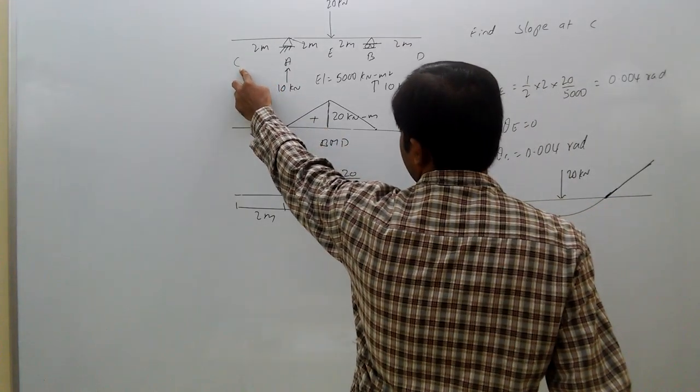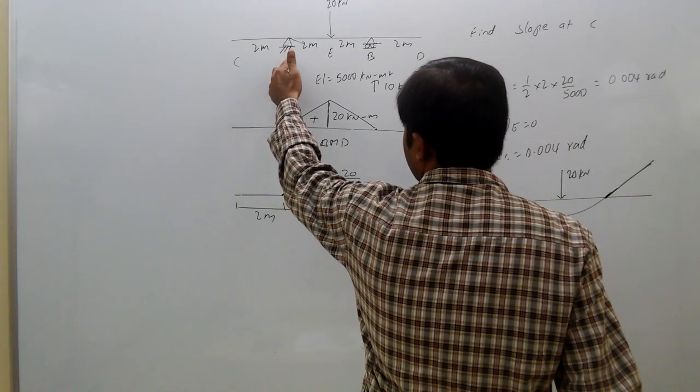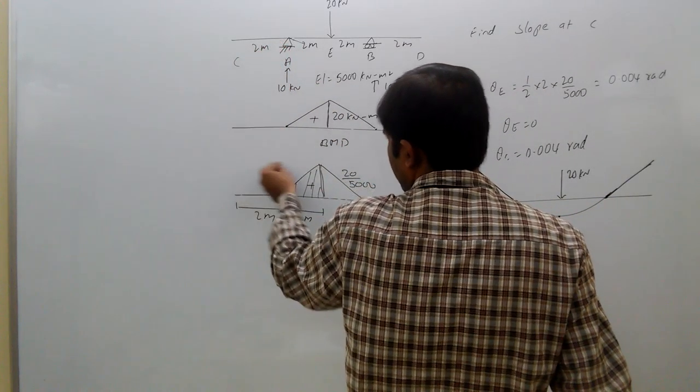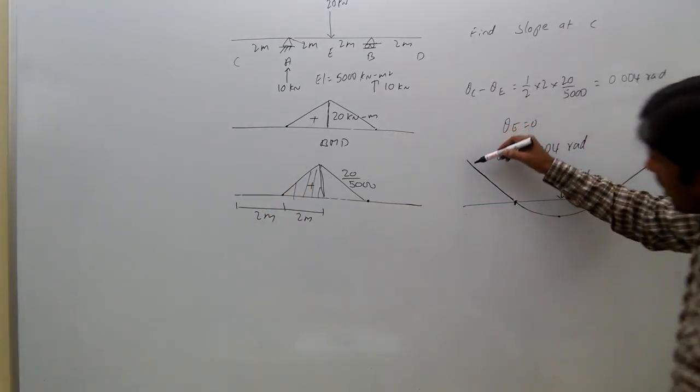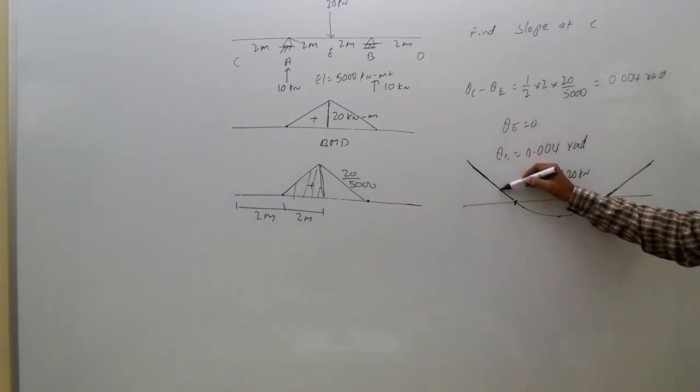That means slope at C and slope at A are both same. In between at every point slopes are same only, because it is a straight line, the elastic curve is straight line like this.